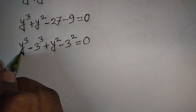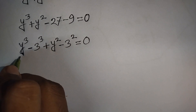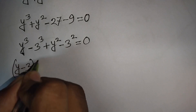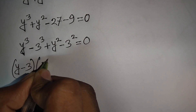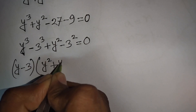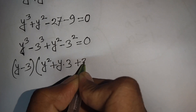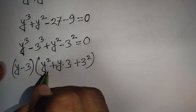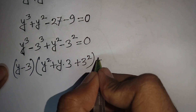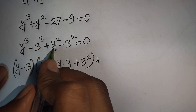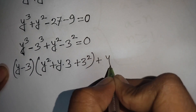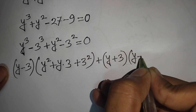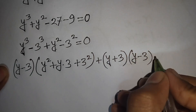Now y³ - 27 can be written as y³ - 3³, and y² - 9 is the same as y² - 3². Applying the a³ - b³ formula to y³ - 3³ gives (y - 3)(y² + 3y + 9), and factoring y² - 3² gives (y + 3)(y - 3). So the equation is (y - 3)(y² + 3y + 9) + (y + 3)(y - 3) = 0.